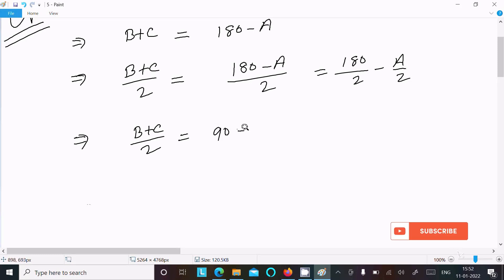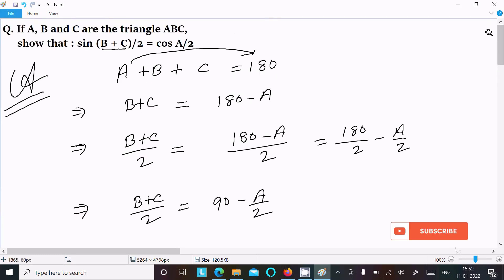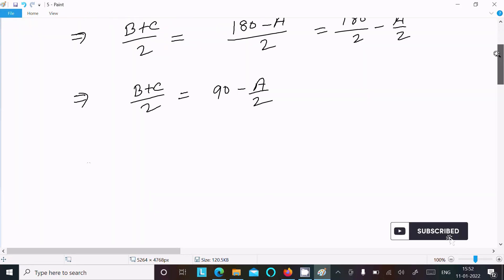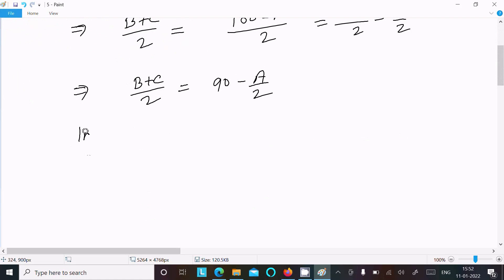So 180/2, that is 90 - A/2. Now after that, sin is there, so let's include sin on both sides.